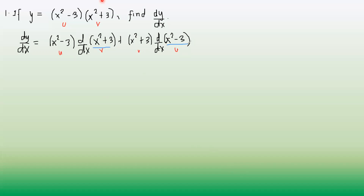Inside we have x raised to n and a constant. Applying those formulas, we will have x squared minus 3 times the derivative of x squared plus 3. Differentiating x squared: apply the power rule — bring down the 2, so 2 times x raised to 2 minus 1, giving us 2x. Plus the derivative of 3, which is a constant, so that is 0.